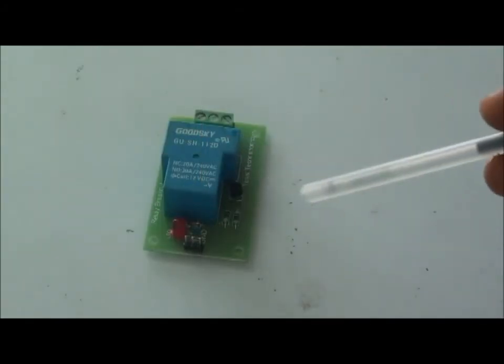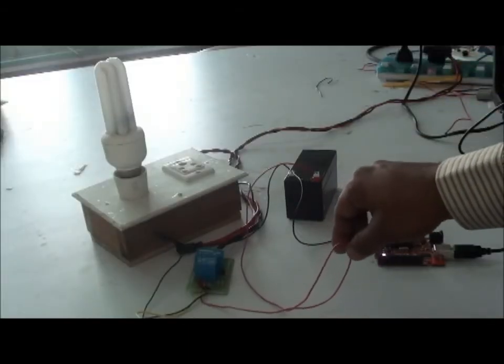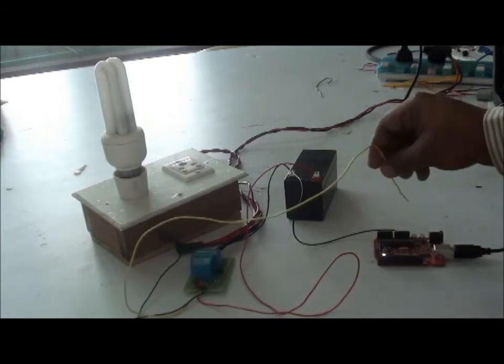Now let us look at it more. Here I am giving 12V supply from the battery and input is from the Arduino board to control the bulb.